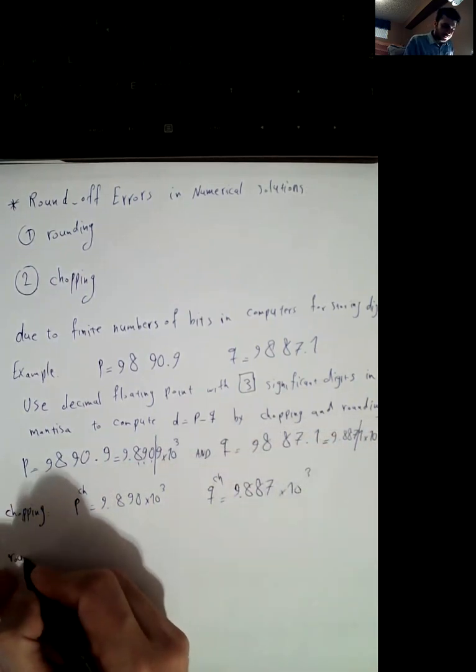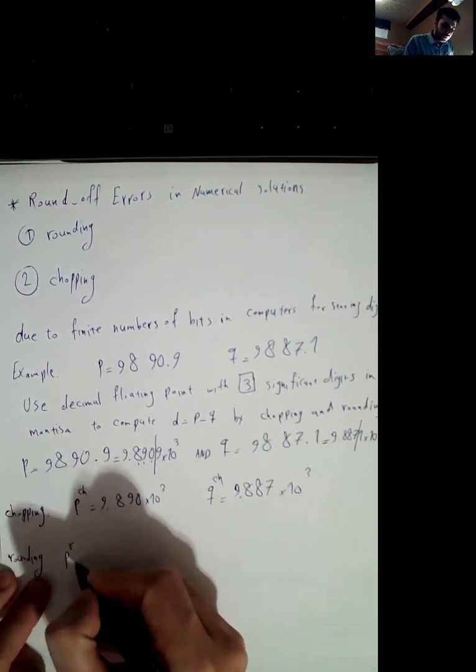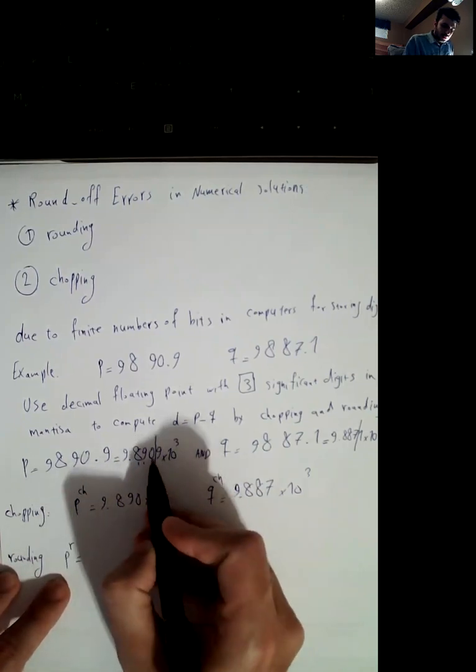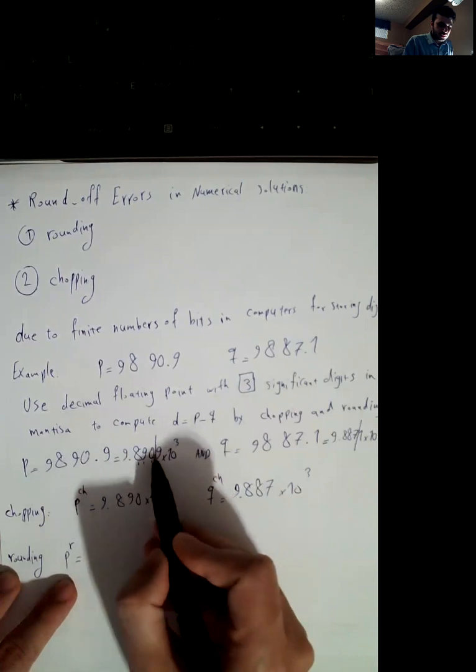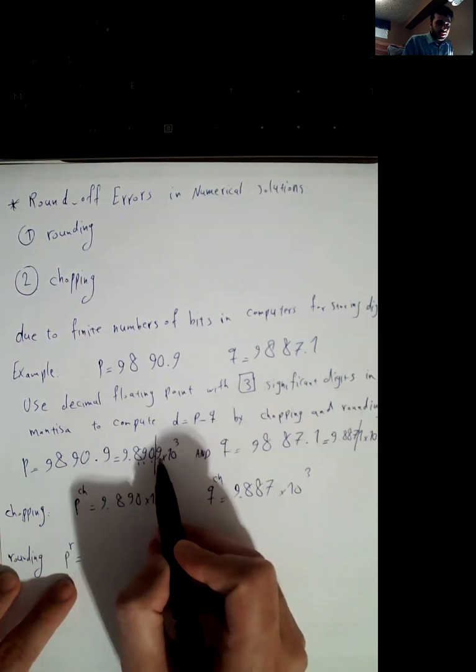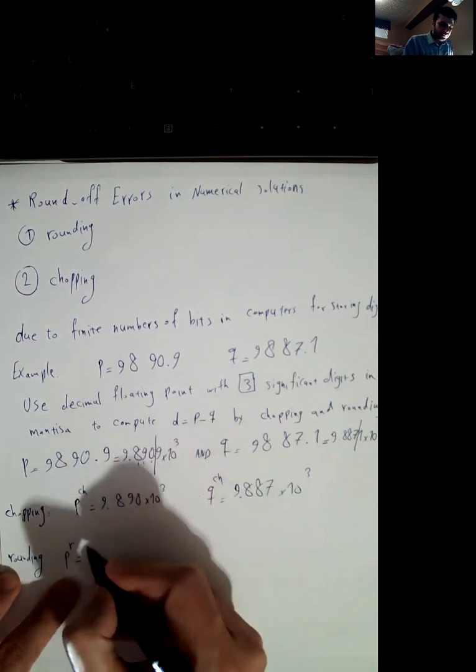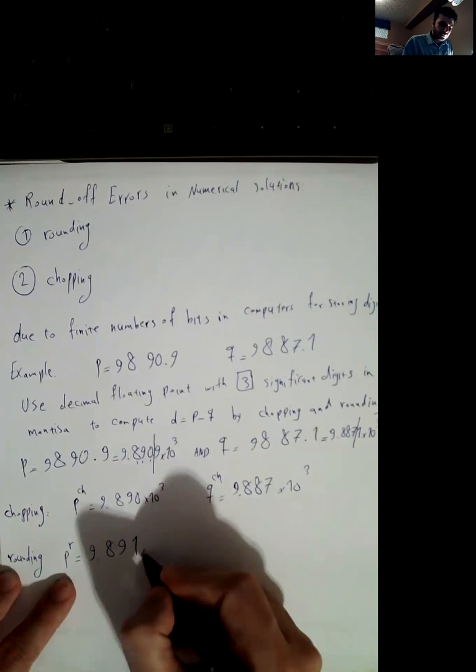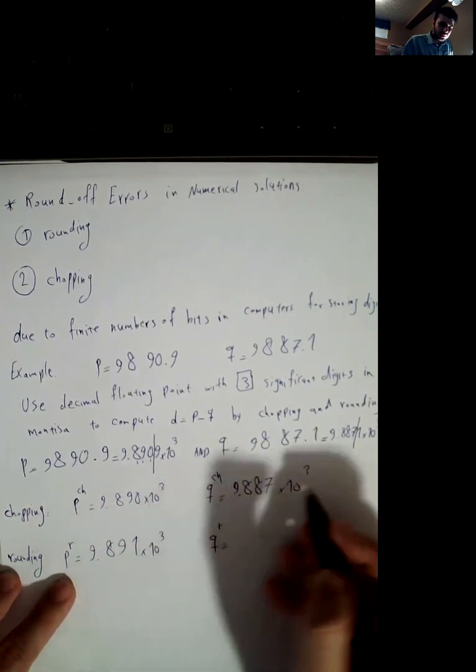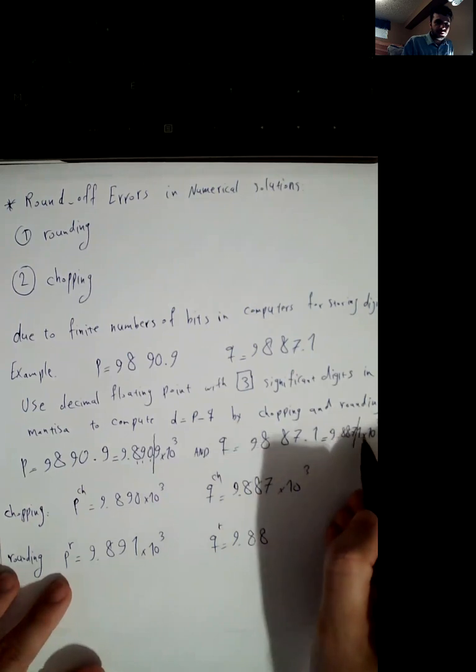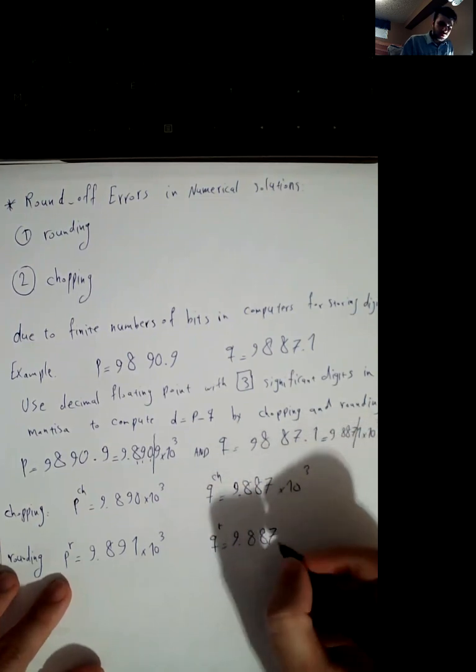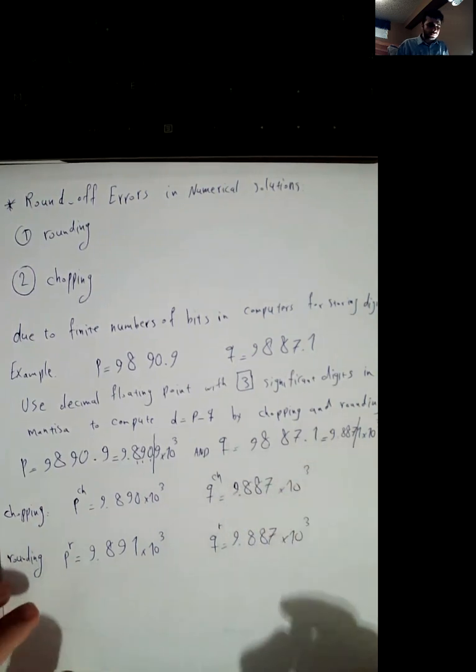So for rounding, p rounding is - for rounding we should pay attention to the first digit after three significant digits in mantissa. For example, zero and nine. Nine is greater than five, so because of that this zero would be one. So 9.891 times 10 to the 3.